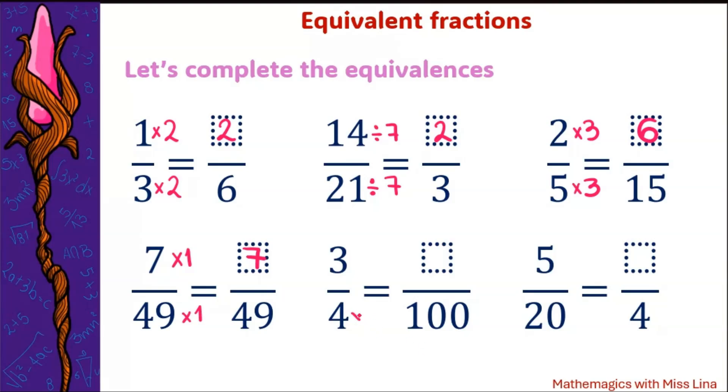In this one four times something is 100. This one is a very useful multiplication that you should remember. 4 times 25 is 100. So you are going to have to do the same at the top. 25 plus 25 is 50 and 50 plus 25 is 75. So 3 times 25 is 75.